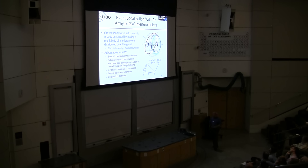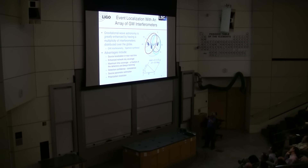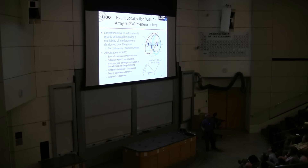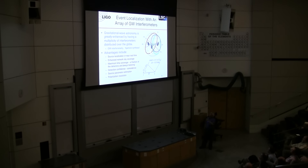We can also use three detectors to locate the source in the sky more accurately. The timing between Hanford and Livingston tells us the source must lie somewhere on a circle on the sky. Amplitude information localizes it further. Three detectors give three circles on the sky that intersect in two places; with amplitude information, we can find the location. The sky localization for GW170814 was about 30 square degrees — much better than we had been able to do with any of our black hole events.